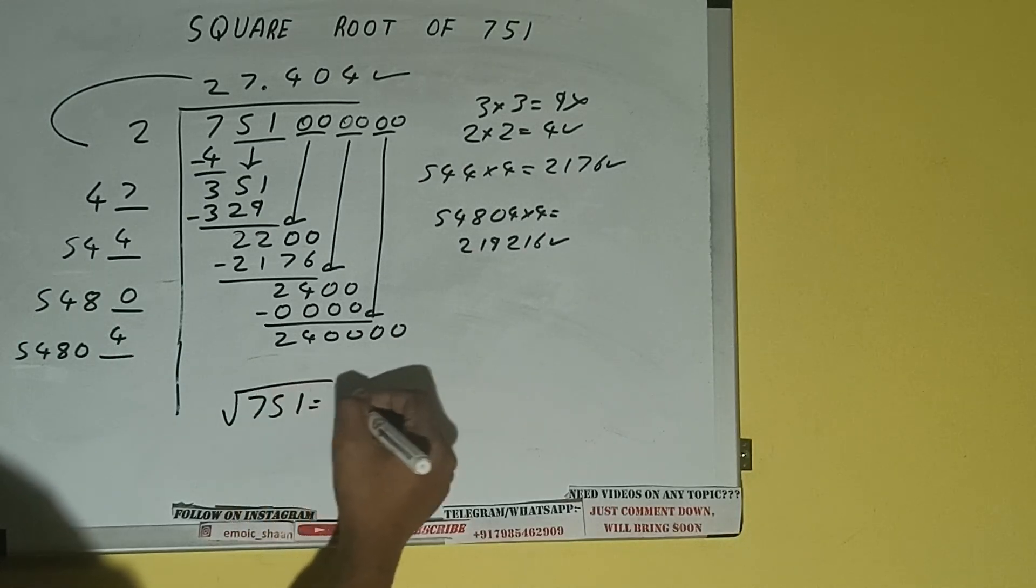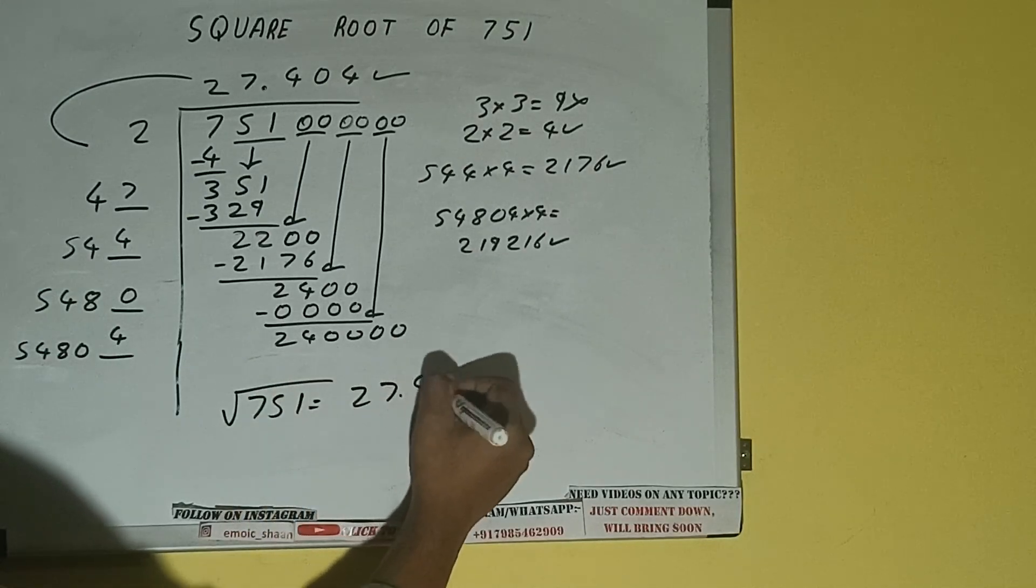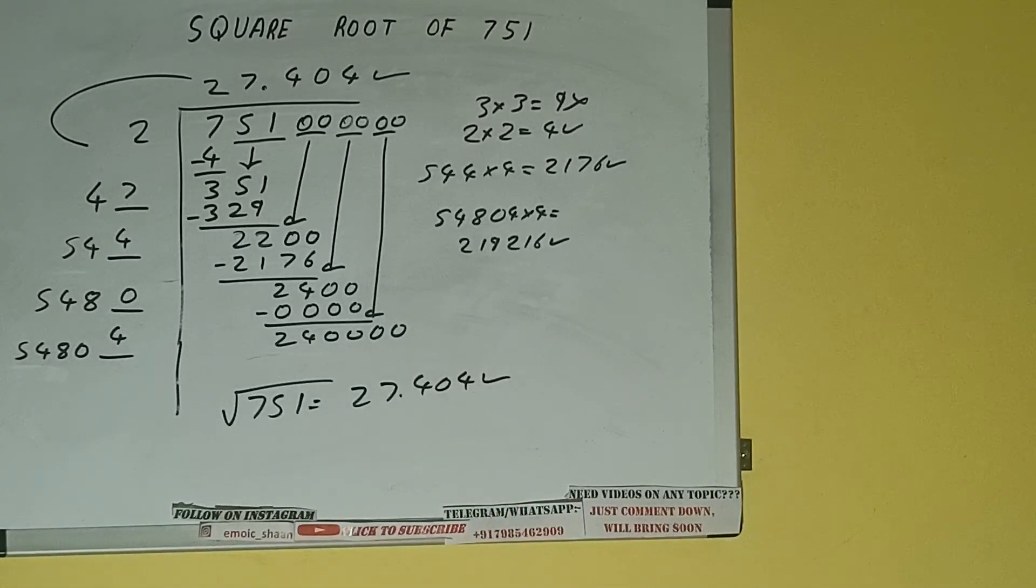So the square root of 751 is 27.404. That's the answer. This is all about the square root of 751.